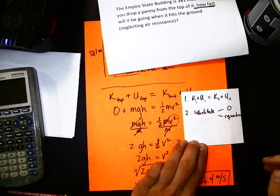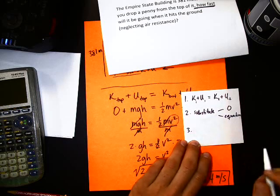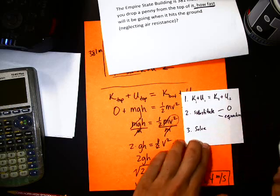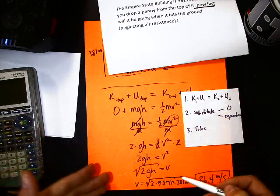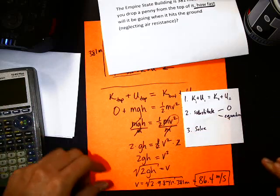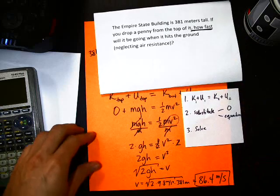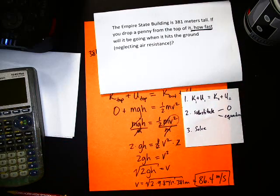Alrighty. So to finish off our steps, step two, after we had our K and U, we substituted each of them. So substitute either a zero, if it doesn't have any, or the appropriate equation, if it does. So remember one-half M V squared, or MGH. Finally, last step, we simply need to solve for what we're looking for. In this case, we're looking for velocity, solve for velocity, plug your numbers in, and you get your answer.